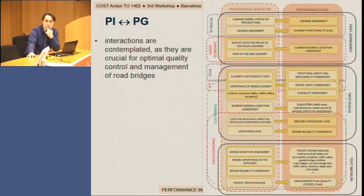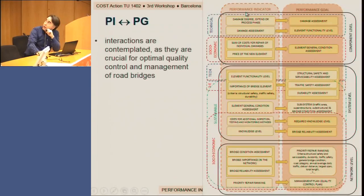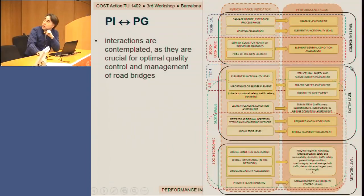The idea suggested in this work is that performance indicators and performance goals should be framed in a structure with two columns: the first with performance indicators and the second with performance goals, which are interconnected. The performance indicators are grouped into technical indicators, sustainable indicators, and socio-economic indicators. The framework can also be viewed as divided in three levels: the component level, system level, and network level.